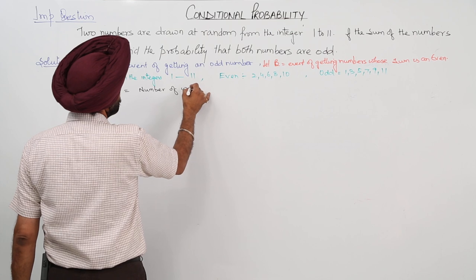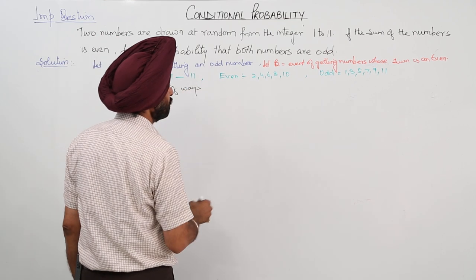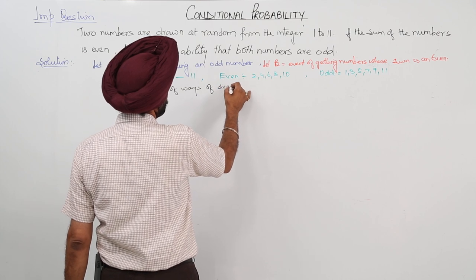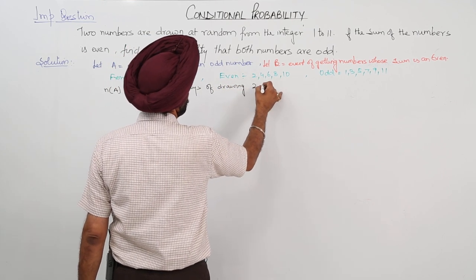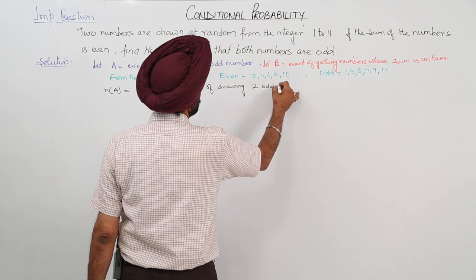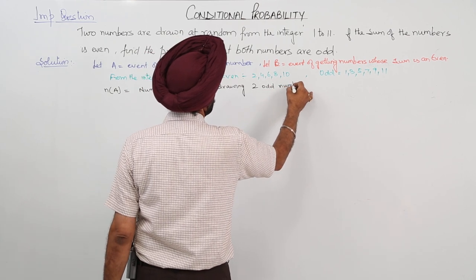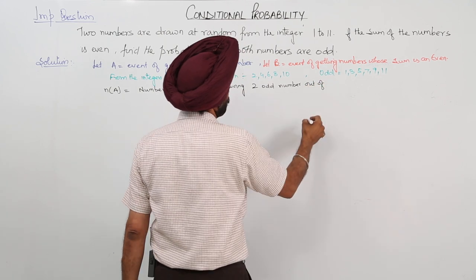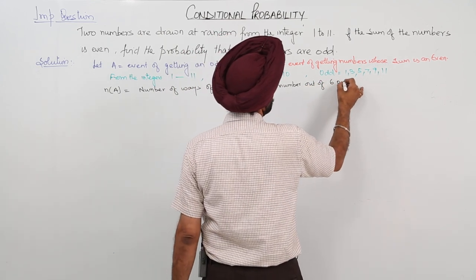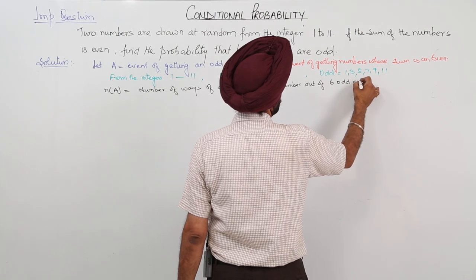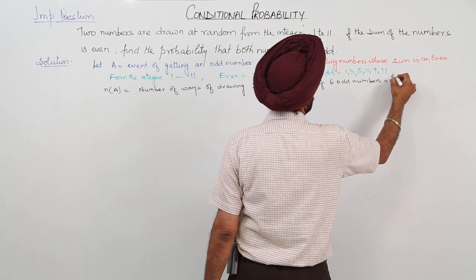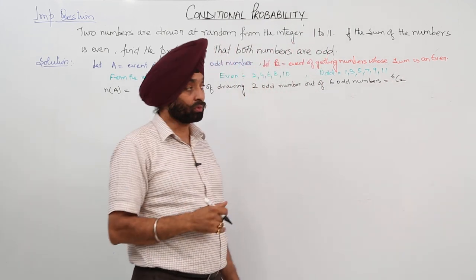n(A) is the number of ways of drawing 2 odd numbers out of 6 odd numbers. This is equal to 6C2.